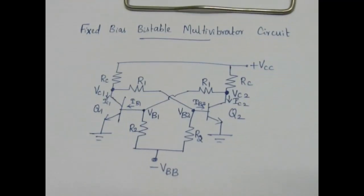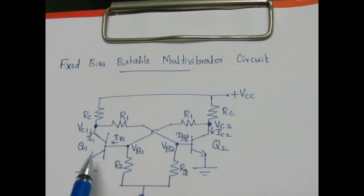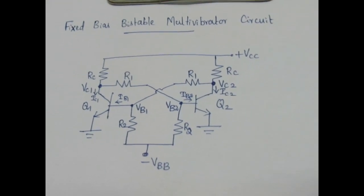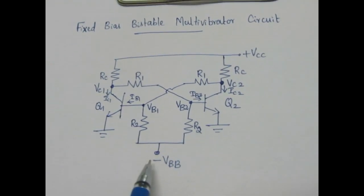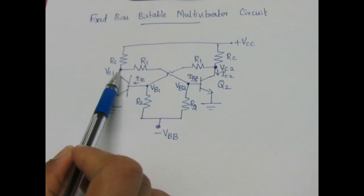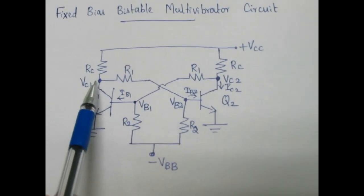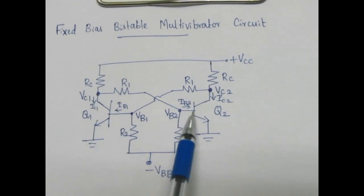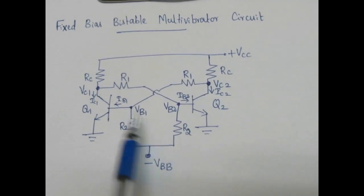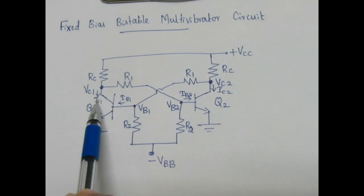In this video we will see how to find the stable state voltages and currents in a fixed bias bistable multivibrator. Consider a fixed bias bistable multivibrator — name all the resistors: the collector resistors RC, the coupling resistors as R1 (which couple the collector of one transistor to the base of the other transistor), and the base resistors as R2.